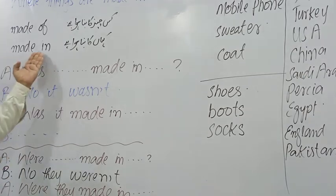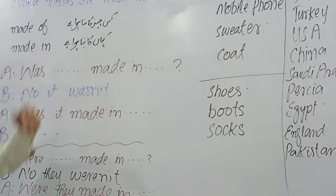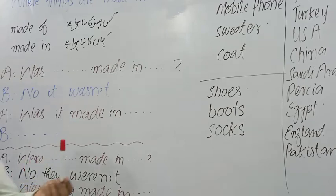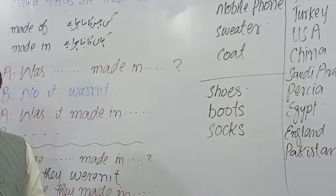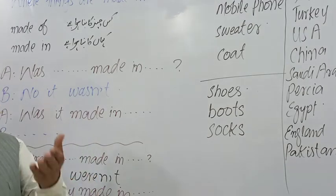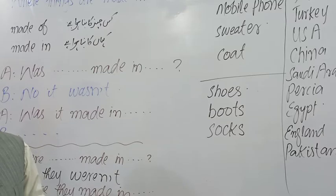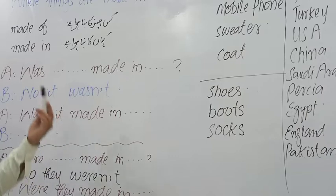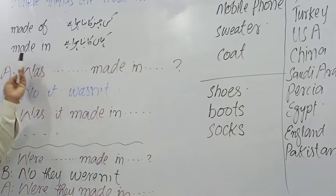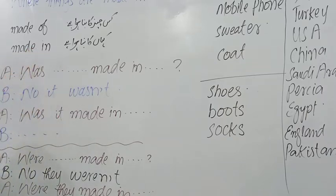The second one is made in — kahan ka bana hua hai. For example, this marker is made in China. Made in Pakistan. This mobile phone is made in Taiwan — Taiwan ka bana hua hai. Made in Germany — Germany ka bana hua hai. So made in — mulk ka naam batayenge zyada tar.